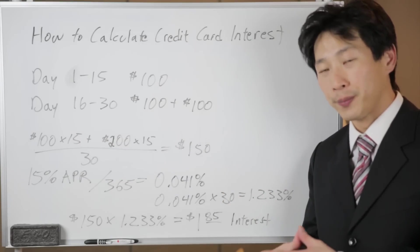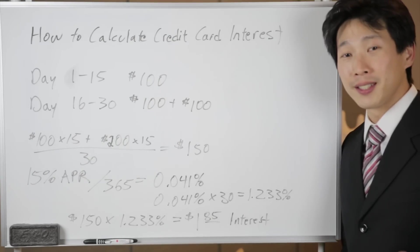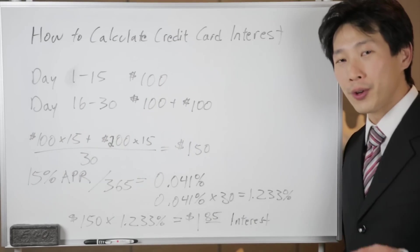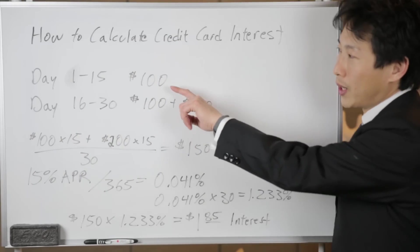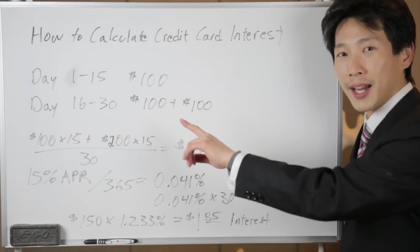Let me go through an example because this makes things a lot more clear. For example, on the first statement day you charge $100 on the first day and you wait 15 days, and on the 16th day you charge another $100.